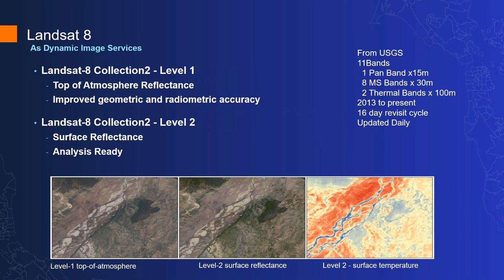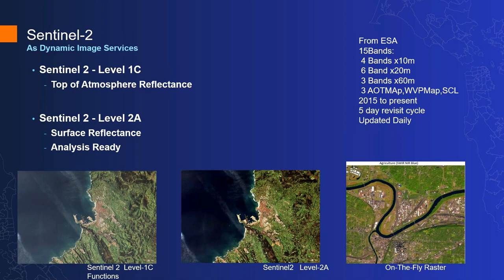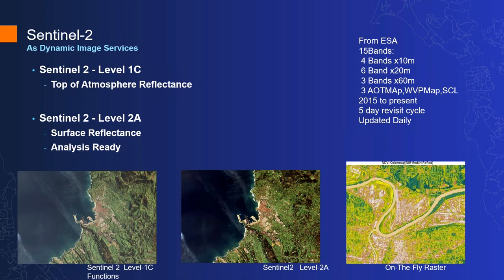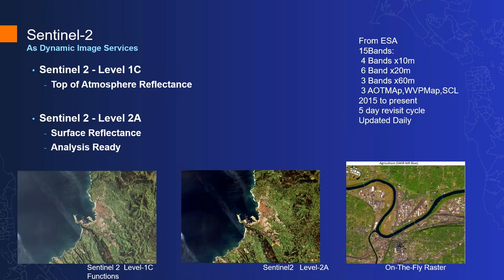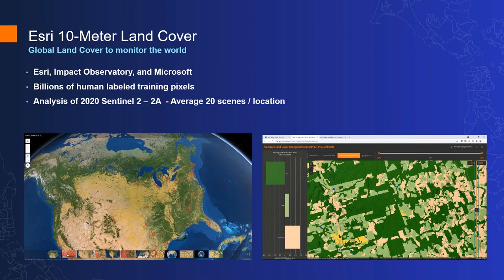The other big data set is Landsat 8, recently updated to include the Collection 2 data from the USGS — 11-band imagery available as both Level 1 (top-of-atmosphere reflectance) and Level 2 (surface reflectance), going back to 2013 and available as dynamic image services. We also recently added Sentinel-2, stored on the Microsoft Planetary Computer, providing Level 1-C and Level 2-A surface reflectance data. It's analytically ready data covering the whole Sentinel-2 collection back to 2015, updated essentially daily with approximately a five-day revisit cycle.